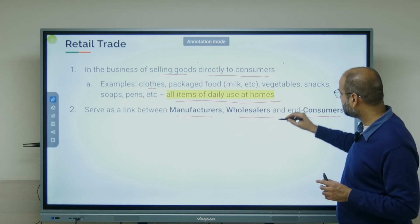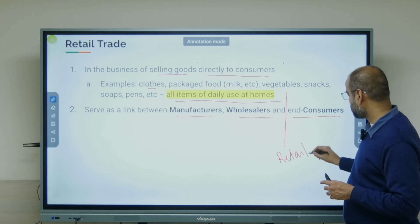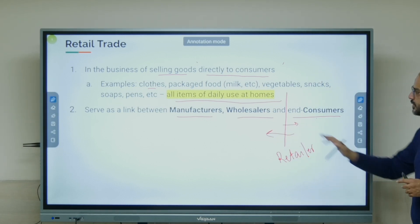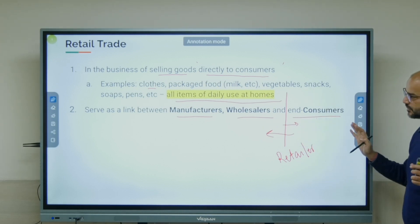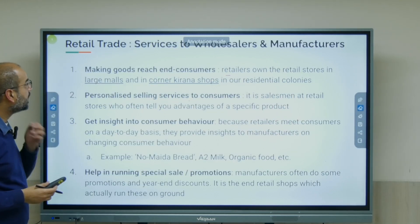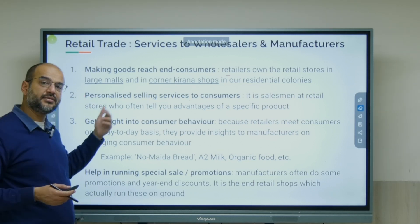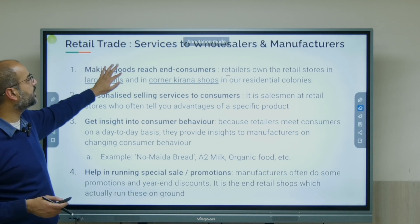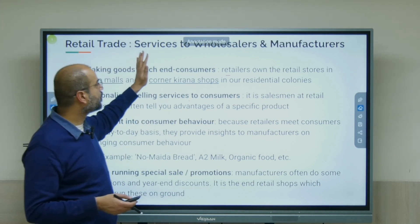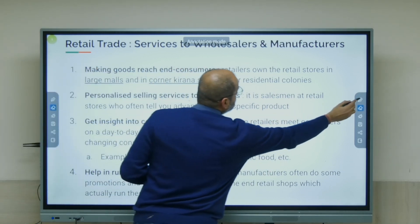The retailer flows between manufacturers and wholesalers on one side, and end consumers on the other. He or she is a link between end consumers and manufacturers and wholesalers. Now that we have seen the wholesalers and manufacturers and which services they offer, in this section we are talking about retail traders, wholesalers, and manufacturers.